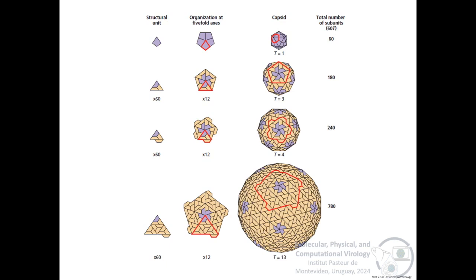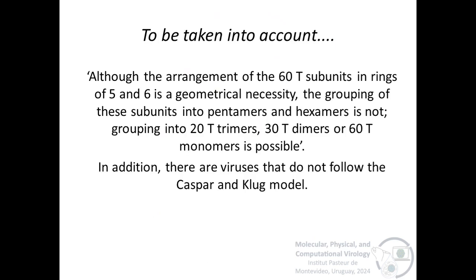The T number can also be defined as the number of subunits that make up the structural unit. For example, since the structural unit repeats 60 times always, in a T equals 13 capsid, the structural unit contains 13 subunits, and the total number of subunits is 780, which is 60T. And, for example, in T equals 4, the structural unit has 4 subunits, and the total number of subunits is 240.